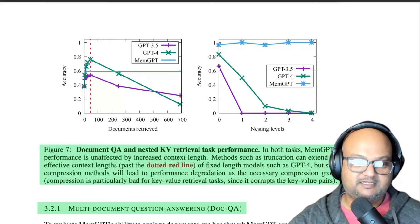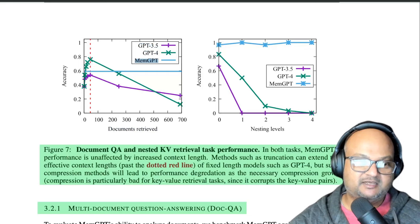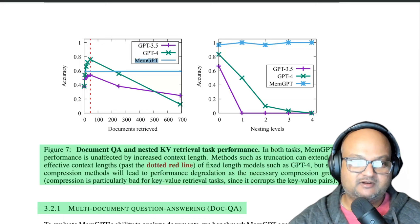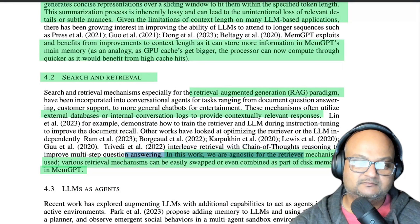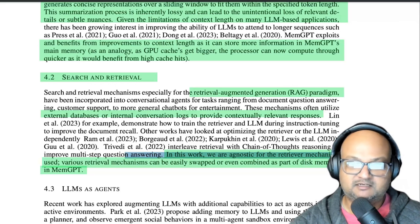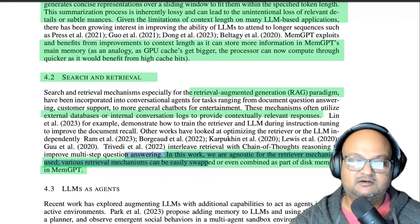What kind of results did they get? Here you see a comparison of multi-document question answering across plain GPT-3.5 and GPT-4 versus MemGPT, and you can see how MemGPT is able to maintain its accuracy as the number of documents grows, beating out plain GPT. Also note that in the comparison with RAG, it's somewhat orthogonal because they abstract over the concrete retrieval mechanism — you could swap out different retriever mechanisms and this MemGPT pattern of paging data in and out from persistence would still work.